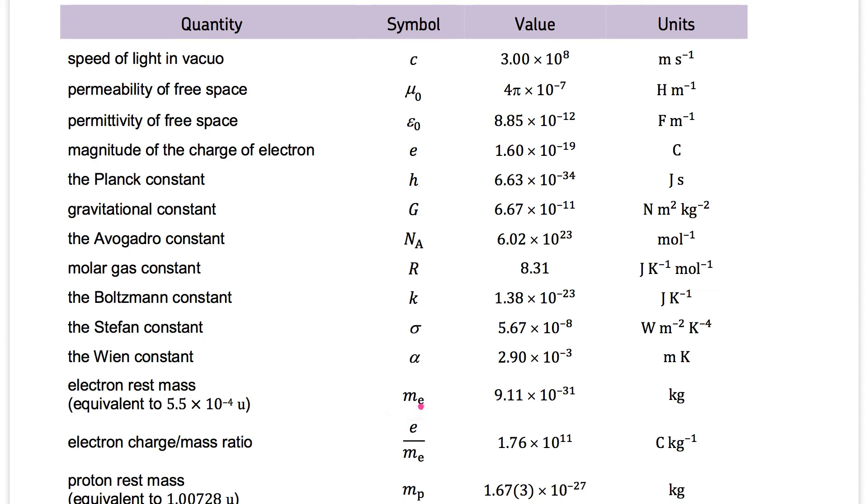Mass of electron, that's the rest mass, not the traveling mass, the rest mass. 9.11 times 10 to power minus 31 kilograms. That's very small.